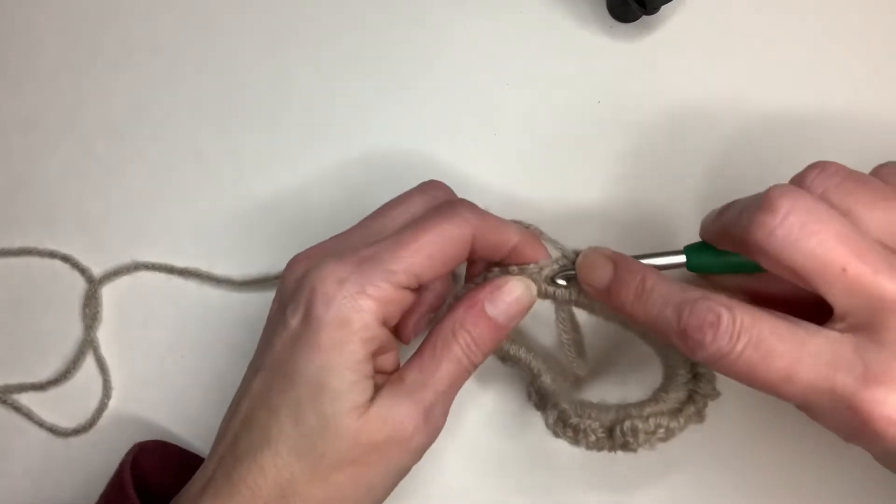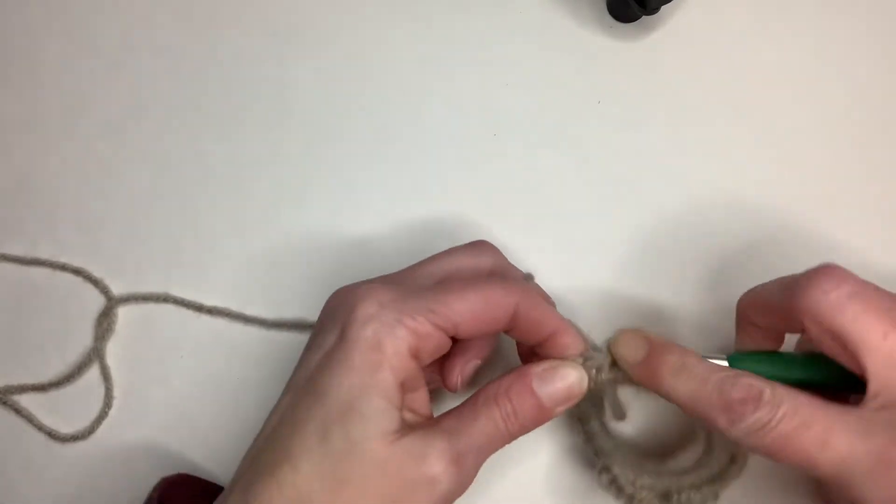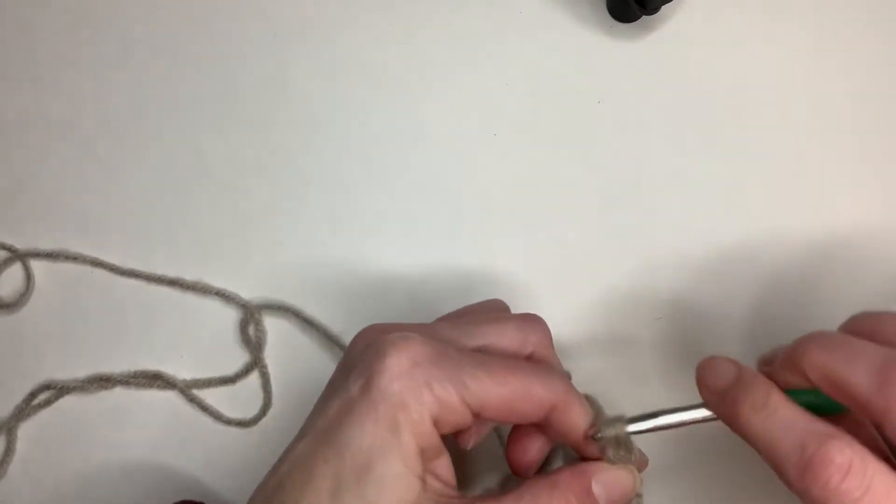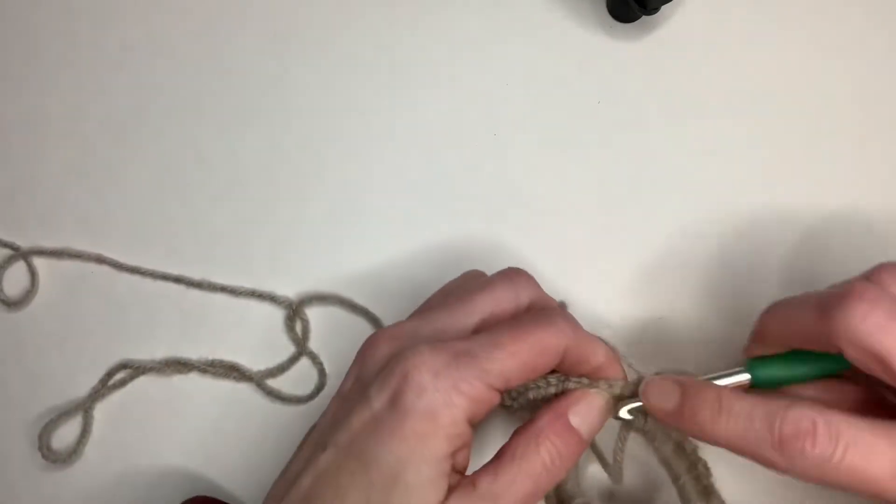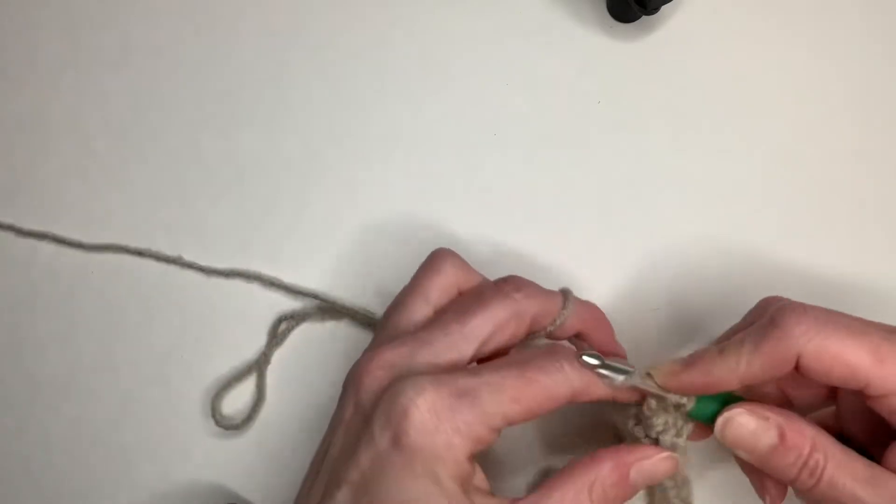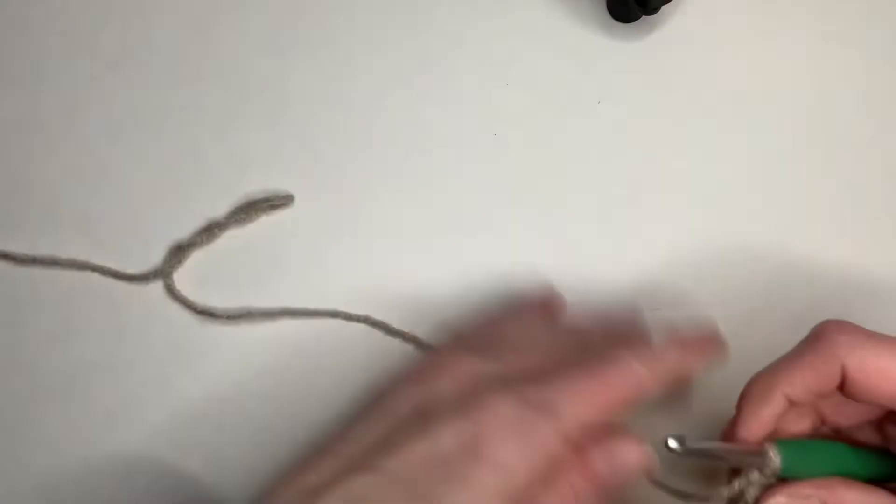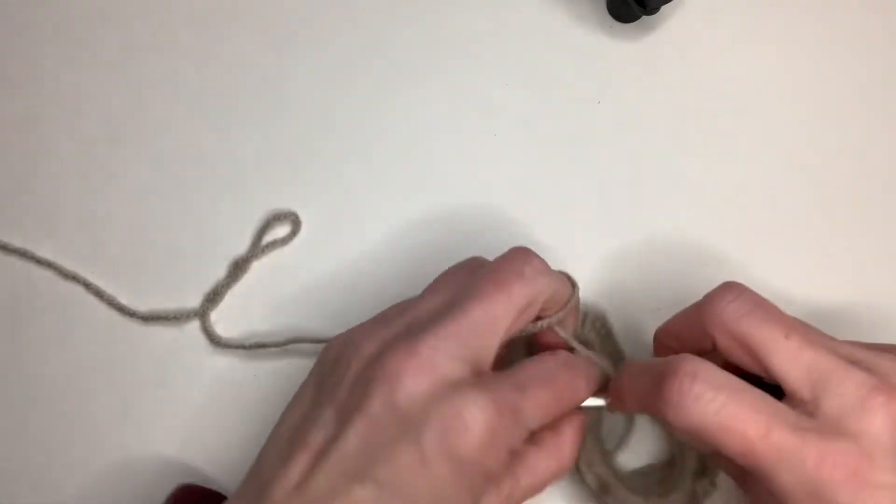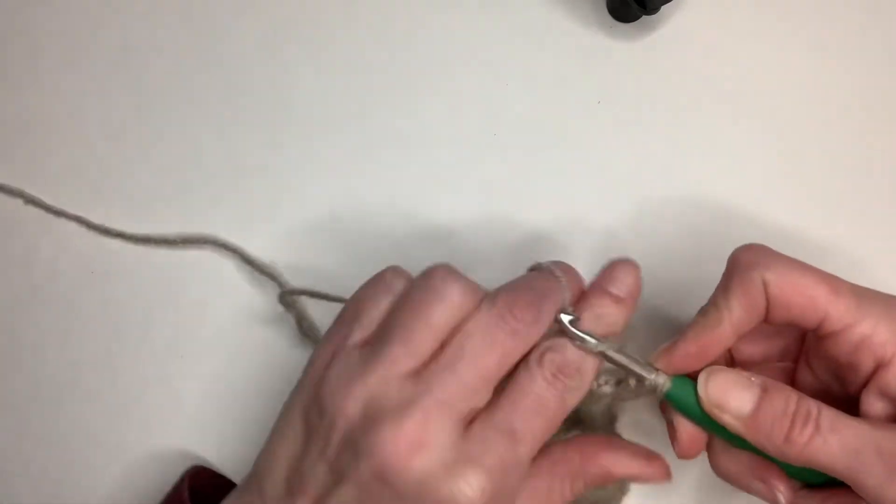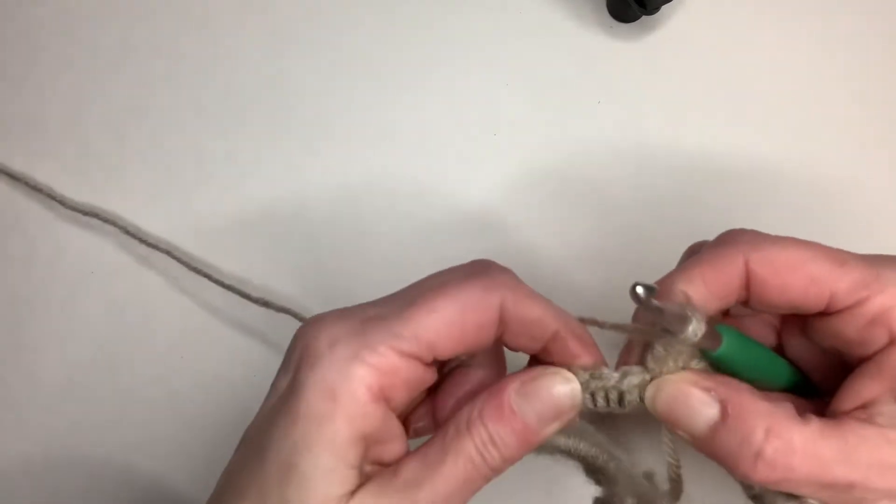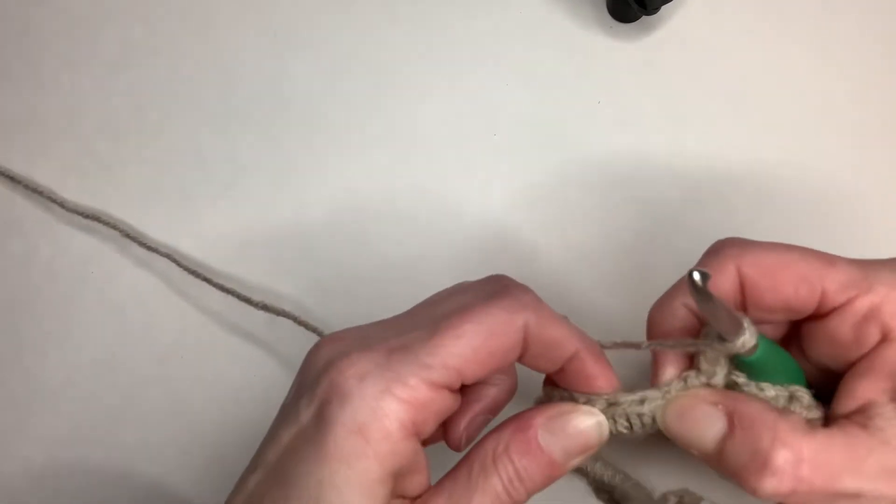And then what you're going to do is you're going to put three double crochets in each single crochet. So this is going to start curling up and wrapping around. It's going to get really tight and kind of hard to put those in there. So three double crochets in each single crochet. You can see the single crochets right there.